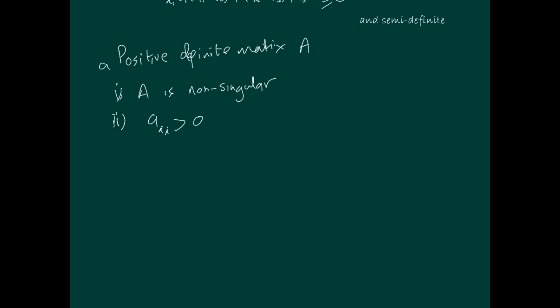Number two, very nice property, is the diagonal elements are all greater than zero. So for all the values, i equals 1, 2, up to n, all greater than zero. That's it.